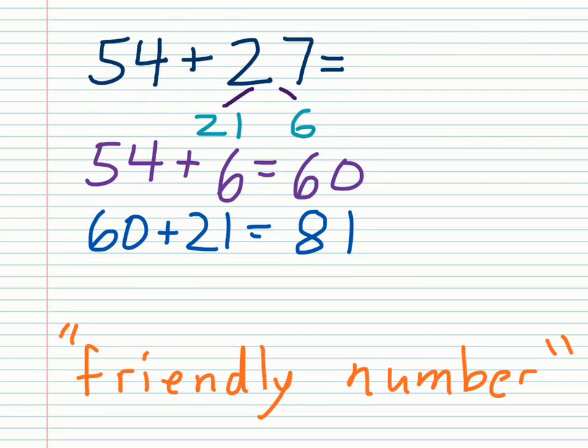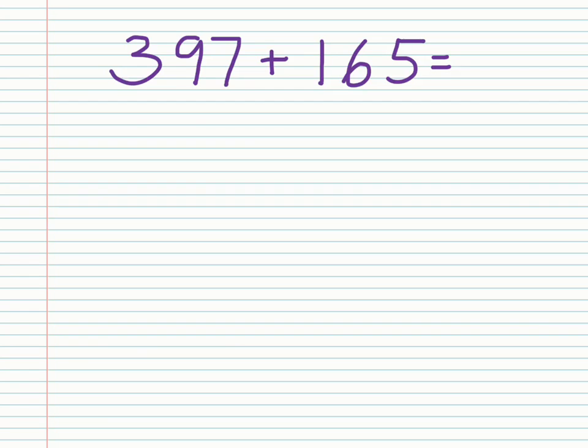Let's do one that's three digits and see how that goes. Here we have 397 plus 165. I'm going to choose to keep this one, and the number I'm going to add in parts is 165.